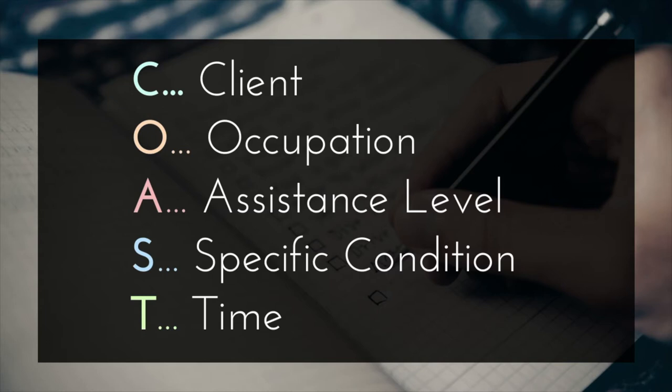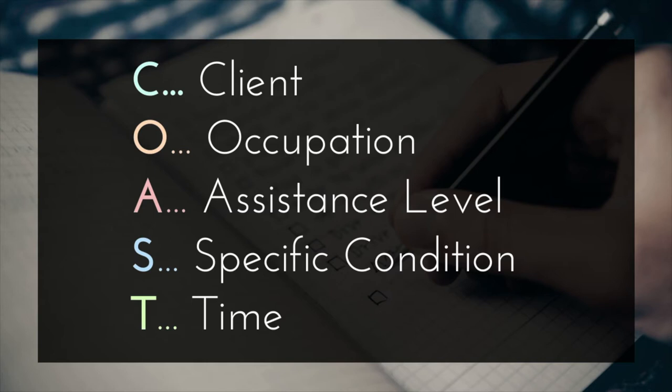The S stands for specific condition, which refers to any extra criteria or supports that help define the conditions under which the goal will need to take place. This can include things like adaptive equipment, modifications of the task, modifications to the environment, time limits, and things like that. Finally, T stands for time, which simply refers to when the goal is anticipated to be met — in other words, the timeline for meeting the goal, whether it's one week or two months or so forth, depending on whether this is a short-term or a long-term goal.